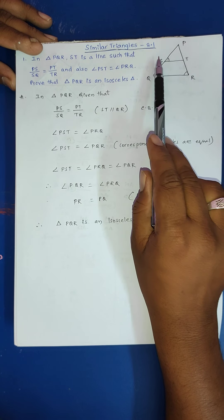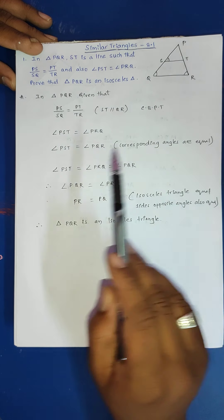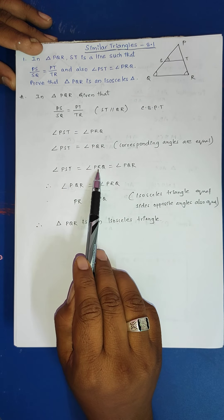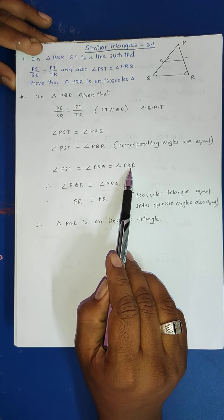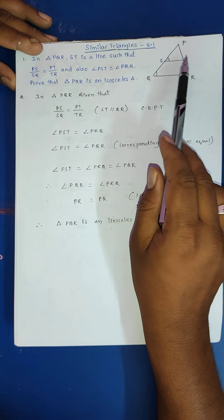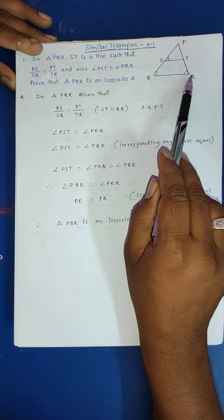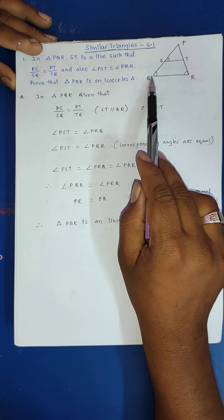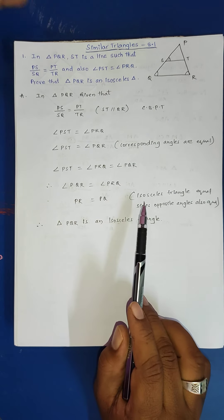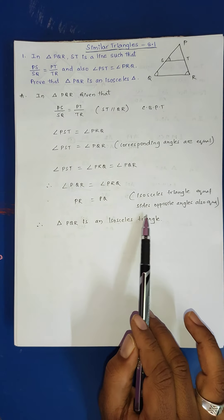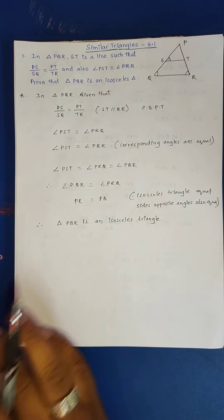Since angle PST equals angle PRQ and angle PST equals angle PQR, we get angle PQR equal to angle PRQ. In any triangle, equal angles have equal opposite sides. The side opposite R is PQ, and the side opposite Q is PR. So PR is equal to PQ. Since an isosceles triangle has two equal sides, therefore triangle PQR is an isosceles triangle.